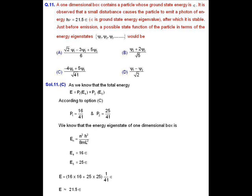The expectation value of energy is ⟨E⟩ = p₁E₁ + p₂E₂ + p₃E₃ + ... Consider option C: ψ = (-4ψ₄ + 5ψ₅) / √41. The probability for ψ₄ is 16/41 and for ψ₅ is 25/41. The total energy is E₄·(16/41) + E₅·(25/41) = 16ε·(16/41) + 25ε·(25/41) ≈ 21.5ε. So option C is correct.